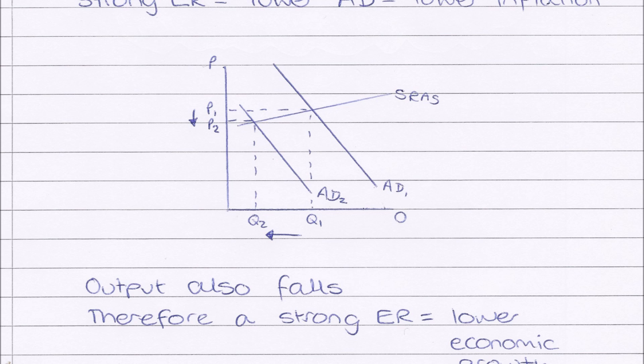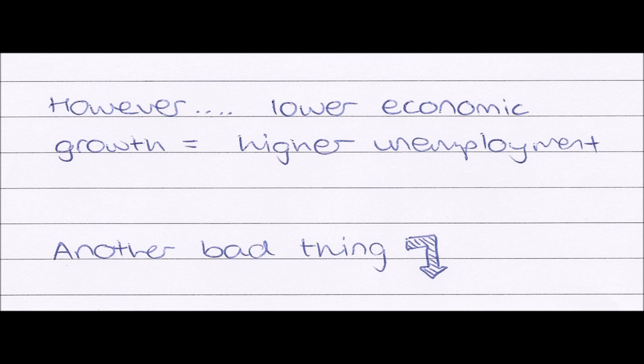Also, because of the exchange rate and aggregate demand falling, output has decreased from Q1 to Q2 along our X axis. Therefore, because of this strong exchange rate, there is lower economic growth because productivity and output levels are falling.